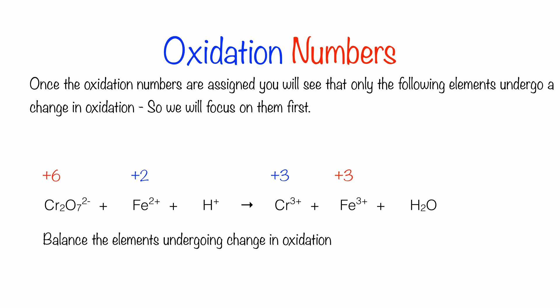If you look at the equation, there are two chromium atoms on the left but only one chromium atom on the right. It is essential that you balance those elements undergoing change in oxidation before you can start balancing an equation using the redox method. So we balance chromium — now you have two chromium on the left and two chromium on the right, and one Fe²⁺ on the left and one Fe³⁺ on the right.